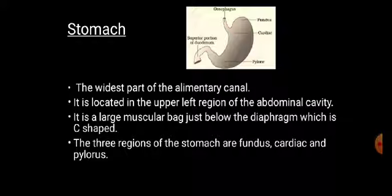The widest part of the alimentary canal is the stomach. It is located in the upper left region of the abdominal cavity. It is a large muscular bag situated below the diaphragm and is roughly C-shaped. The stomach is divided into three regions: fundus, cardiac, and pylorus.